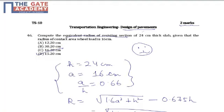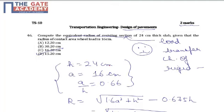These parameters govern the load transfer characteristics of rigid pavements. Now here h is known, that is the height of pavement, and the area of contact is known, so a/h is computed as 0.66.